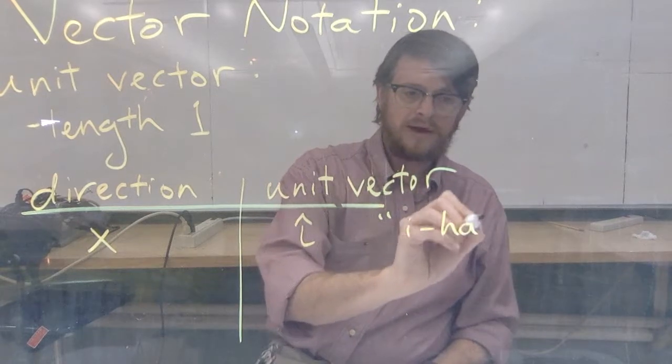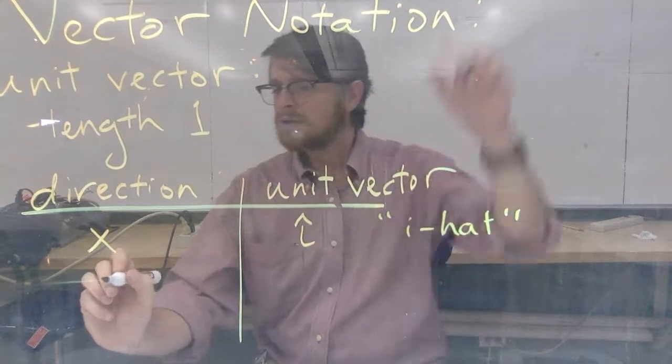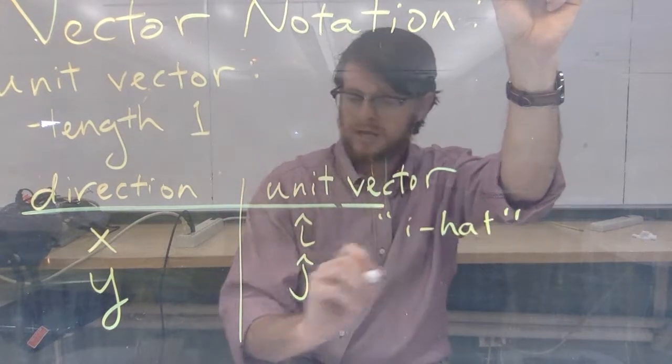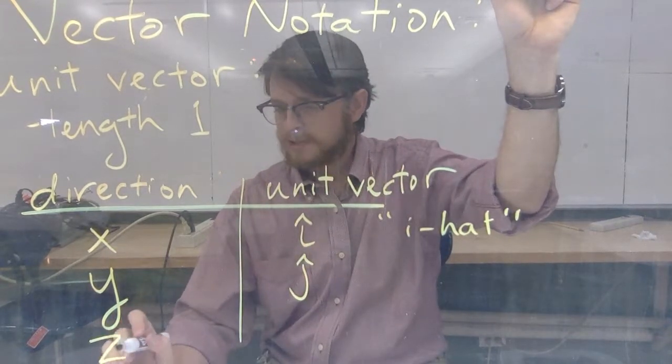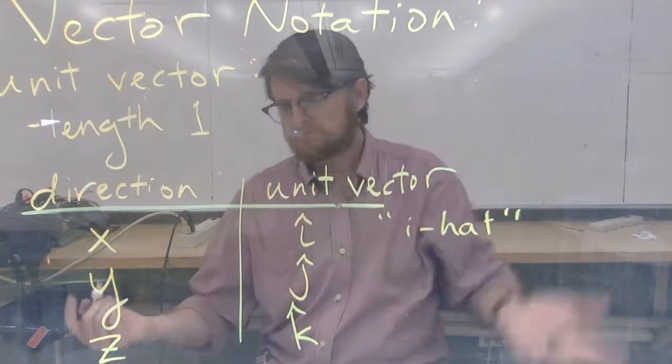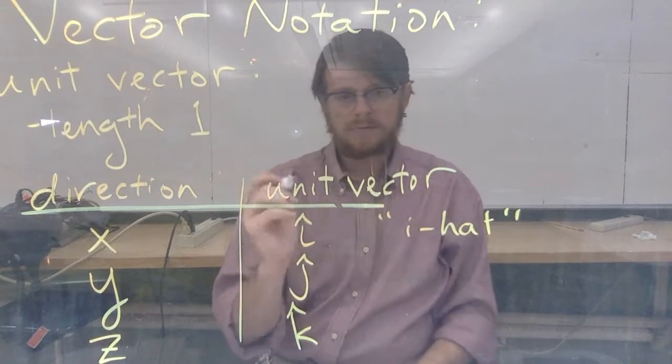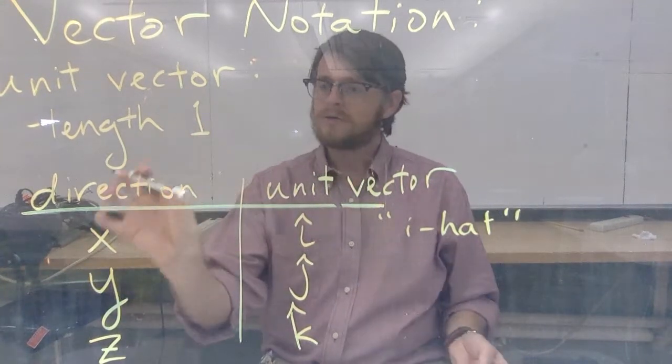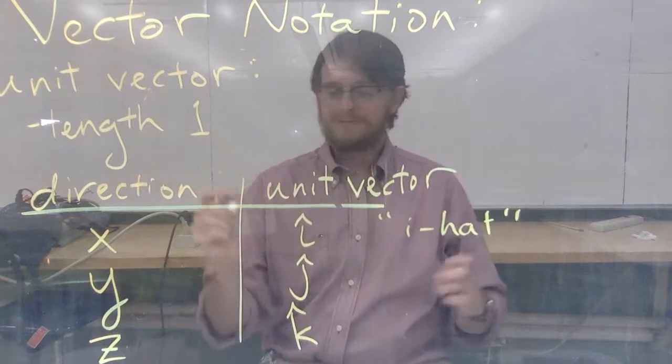In the y-direction, we simply proceed forwards in the alphabet, i-hat, j-hat. And if you need a z-direction, then it's k-hat, which we will rarely use in AP Physics C mechanics, but we might as well have it. So what does this mean visually?